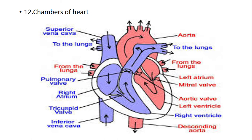Twelfth question: chambers of the heart. The heart has four chambers: right atrium, left atrium, left ventricle and right ventricle. The right atrium receives deoxygenated blood from the upper part of the body via the superior vena cava and from the lower part via the inferior vena cava. Blood goes to the right ventricle, from where the pulmonary artery takes it to the lungs for purification. After purification, it comes to the left atrium, then to the left ventricle, and finally through the aorta to all parts of the body.